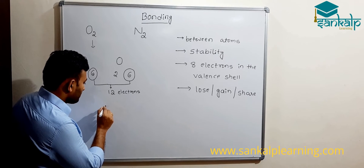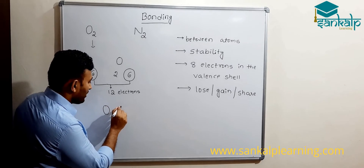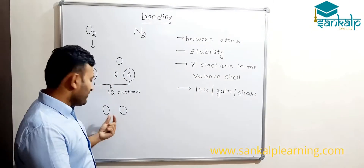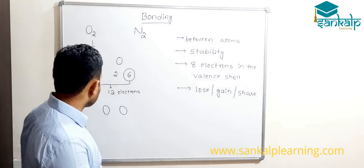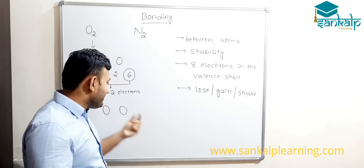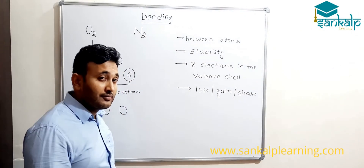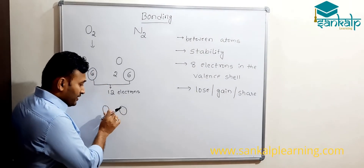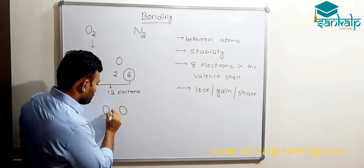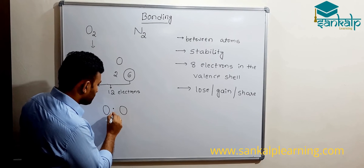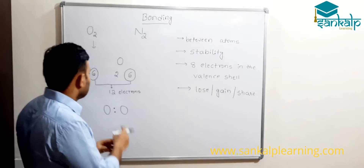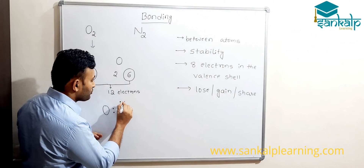We should try to keep eight electrons around each oxygen atom. That's the idea — every atom should have eight electrons in the valence shell. There are 12 electrons total, and between these 12 electrons we have to make each atom have eight electrons in the valence shell. Between the two oxygen atoms, there must be at least one bond, so there must be at least two electrons between these two atoms. Let's try to add the remaining electrons so that each atom will have eight electrons in the valence shell.